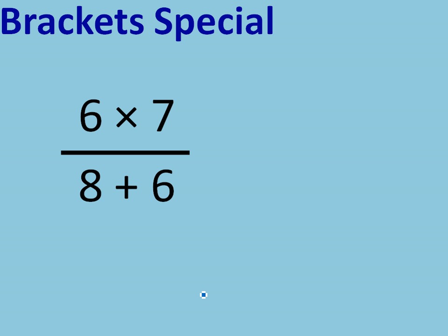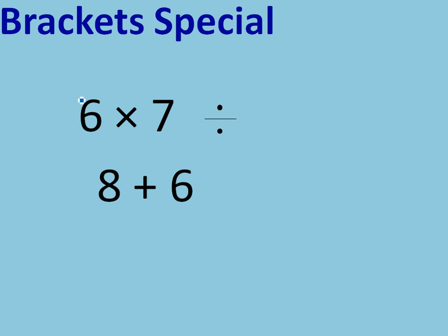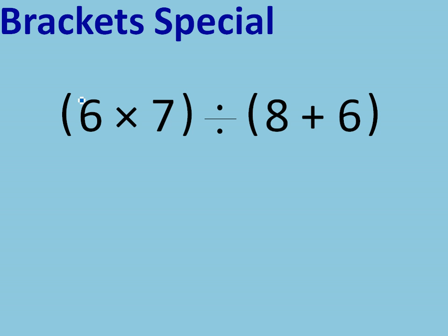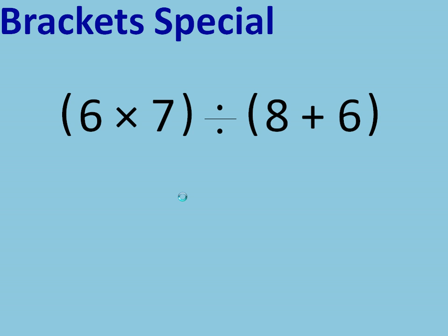Here's another example: 6 times 7 over 8 plus 6. If we think about this in terms of brackets it'll become more obvious what we need to do. The top stays where it is and we're going to divide by what's on the bottom. Put them into brackets to remind you to work out each part first. So 6 times 7 is 42, and 8 plus 6 is 14. So we need to do 42 divided by 14, which is 3.